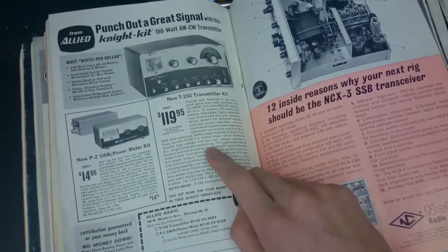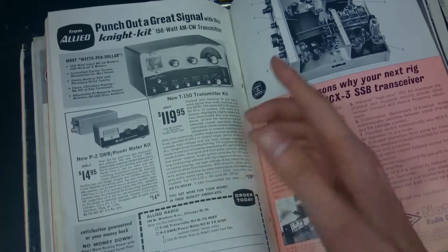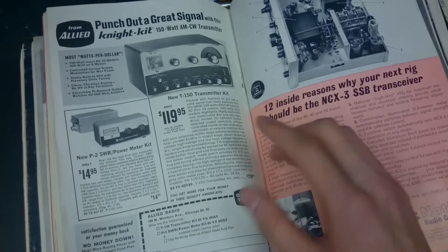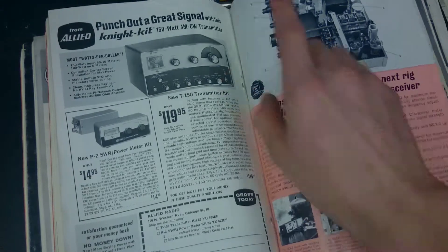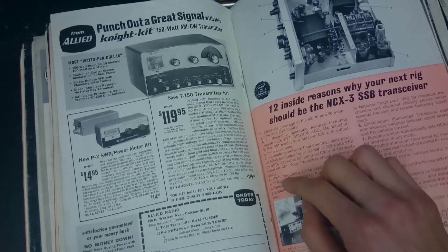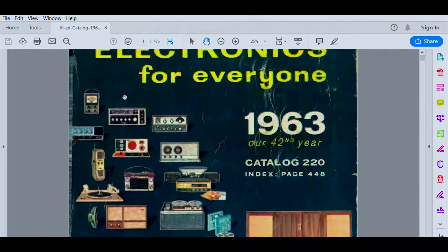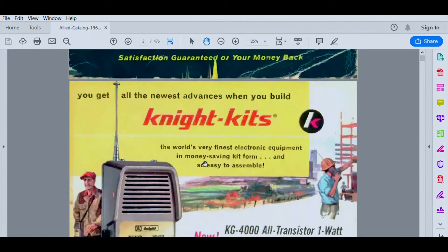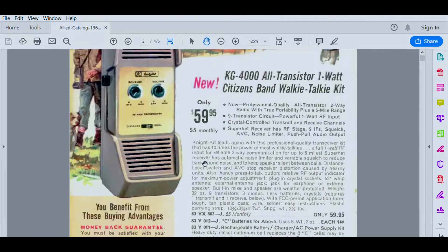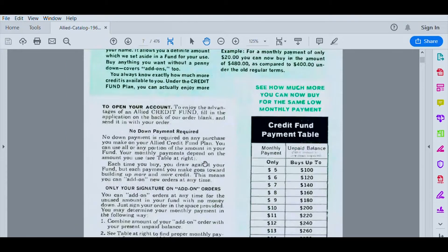What I did was I dug up a catalog from Allied Radio in 1963 that actually mentions the Knight kit I have here. Here is the catalog I was looking for that had the prices. 1963 seems to be the magical year that I needed to be finding.